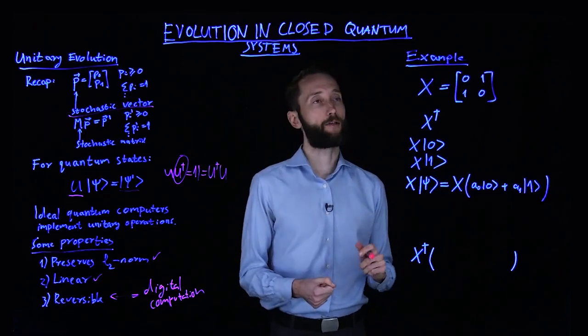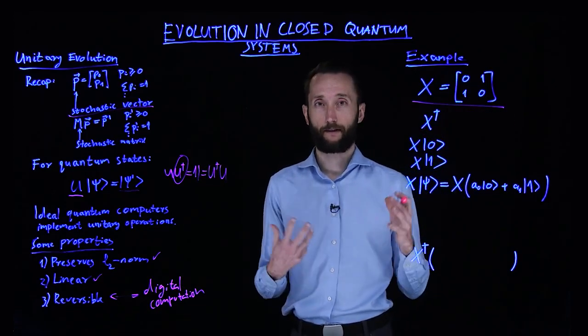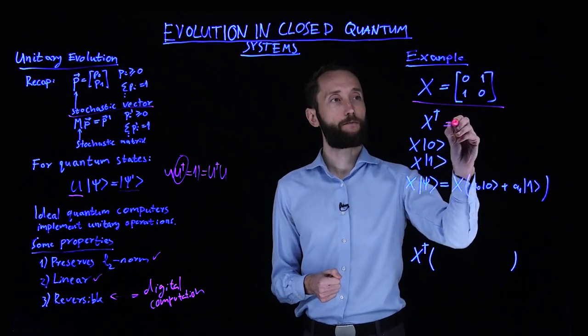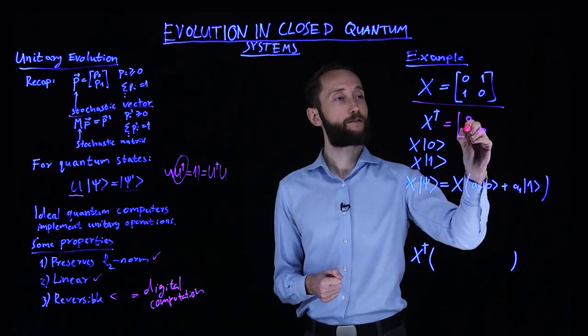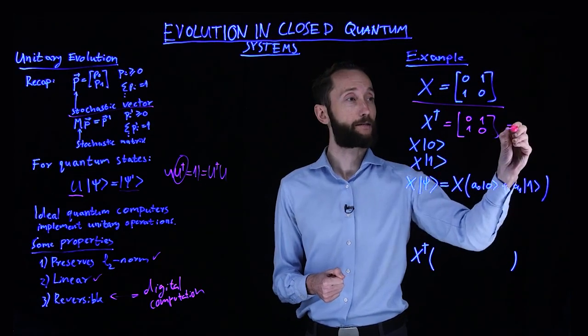As an example, let's look at this operation, which is also called the NOT gate or the X gate. So if you look at what's its complex conjugate, well, it's a symmetric real matrix. So its complex conjugate transpose, it's going to be itself. It's the same as X.